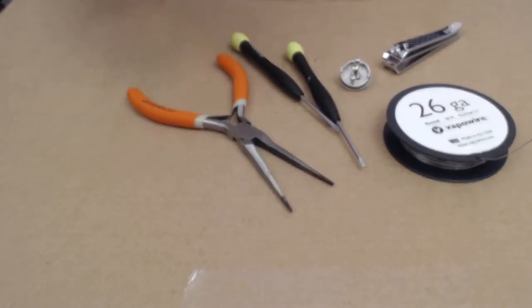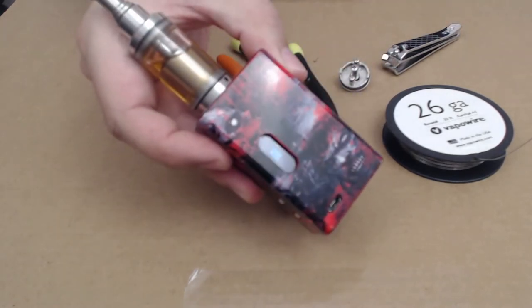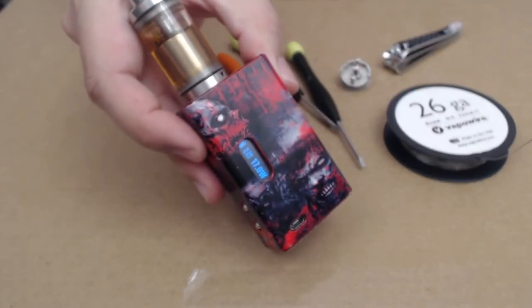Need something to build on, which we're just gonna use this Meraxus clone. Some pliers and then an ohm reader. I don't have a stand-alone ohm reader so I'm gonna use my DNA30. Must, must have an ohm reader.